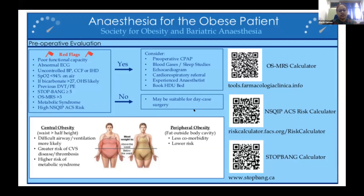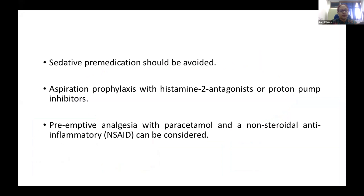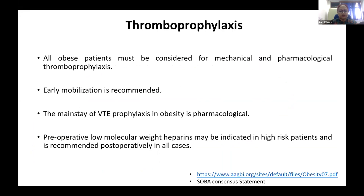Regarding pre-medication, because of the increased risk of respiratory depression and desaturation, sedative pre-medication should be avoided in obese patients. Aspiration prophylaxis can be given in the form of H2 antagonists and proton pump inhibitors, and pre-emptive analgesia with paracetamol and NSAIDs can be considered. Obesity itself is a risk factor for thromboembolism, so all patients must be considered for both mechanical and pharmacological thromboprophylaxis. Early mobilization is recommended post-operatively. The mainstay of venous thromboembolism prophylaxis in obesity is pharmacological.